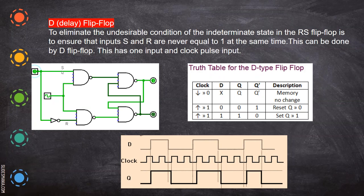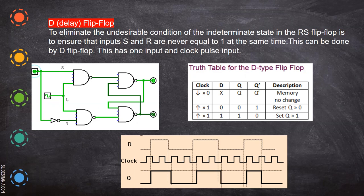So the forbidden condition is eliminated by giving the same input — one direct and one as complement. The clock is connected to the latch. Now, during the negative edge triggering, whatever may be in D, whether it is 1 or 0 — don't care — there will be no change in the memory. The previous state of the memory will be retained.